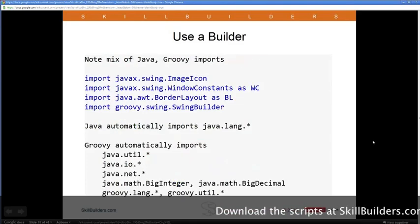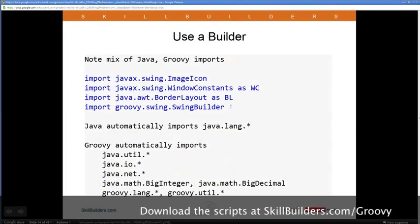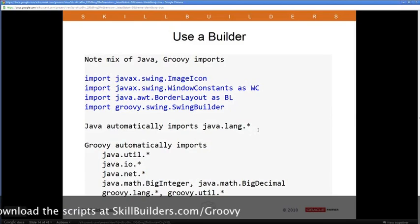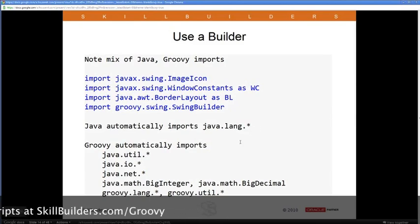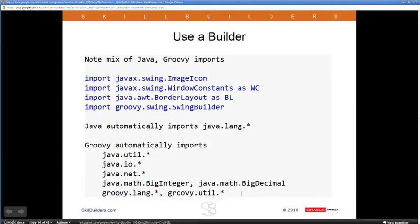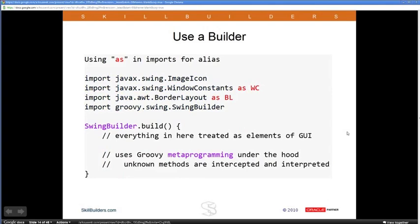Notice the import statements mix Java imports and Groovy imports freely. Java automatically imports java.lang, but Groovy goes beyond that — it automatically imports java.util, java.io, java.net, java.math.BigInteger and BigDecimal, as well as groovy.lang and groovy.util. This cuts way down on the number of import statements needed in your program. There's also the 'as' keyword in Groovy — here I imported javax.swing.WindowConstants and gave it the alias WC, so I can just use WC anywhere in the file.